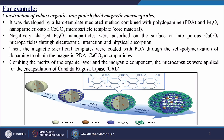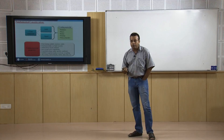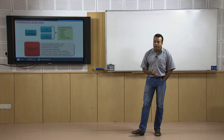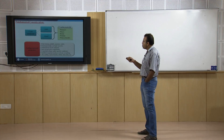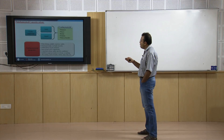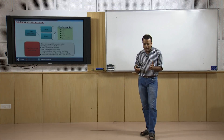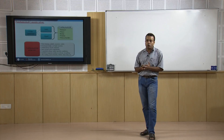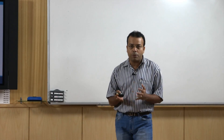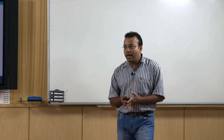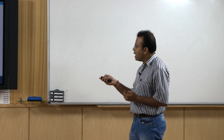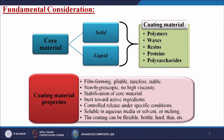The fundamental considerations: the core material can be in solid or liquid form. The coating materials are divided into polymers, waxes, resins, proteins, and polysaccharides. This kind of microencapsulation is mainly used for biomedical, medical, or drug delivery applications, so we generally use these types of materials as coating materials.